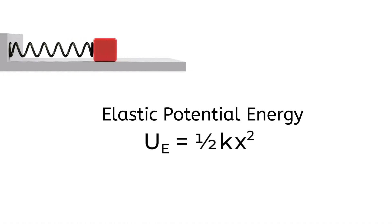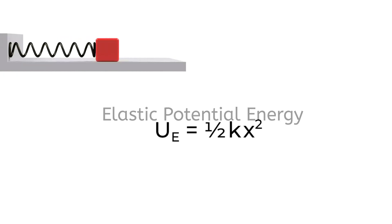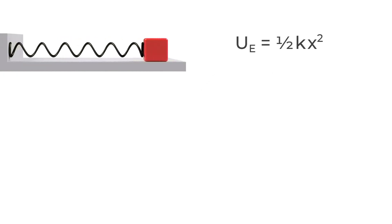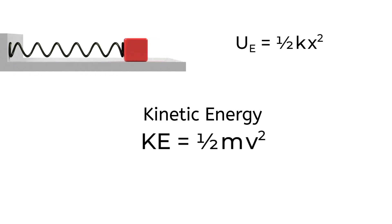There are two types of energy that we have to deal with here. There's the energy in the spring, which we call elastic potential energy. That's given by the equation 1/2 kx², where k is still the spring constant, and x is still the distance the spring has been stretched from equilibrium. We also have kinetic energy, the energy associated with the block's velocity. That's 1/2 mv².